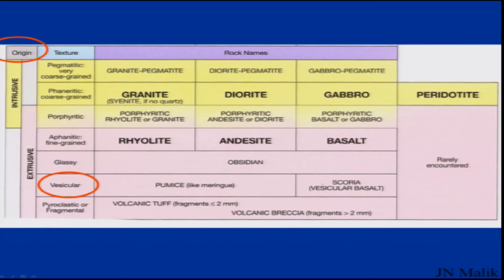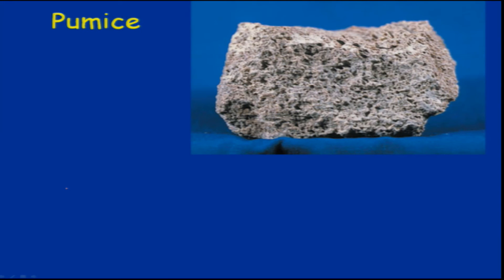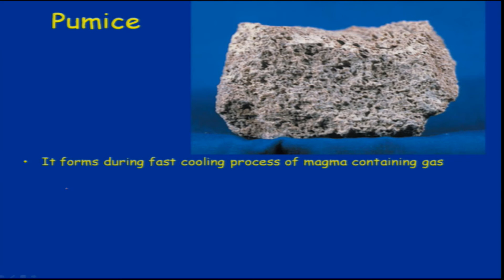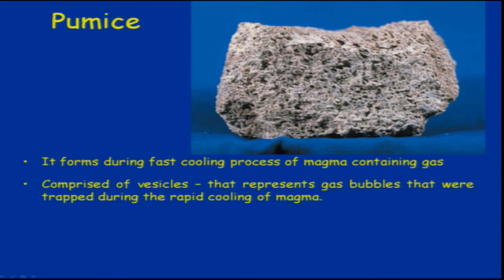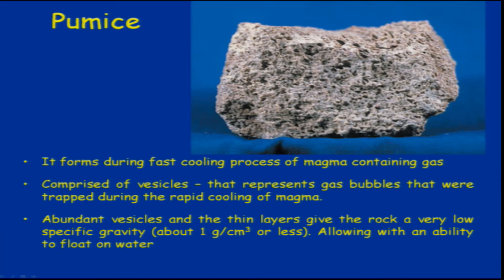Looking at extrusive rocks with vesicular texture, we have pumice. Pumice is a comparatively very light rock with cavities within it. It forms during the fast cooling process of magma containing gases — the eruption or removal of gases leaves behind vesicles. It is comprised of vesicles that represent gas bubbles trapped during the rapid cooling of magma.